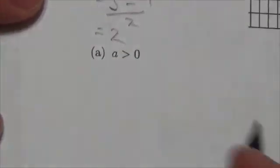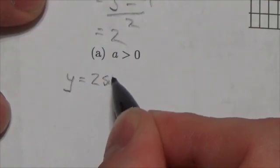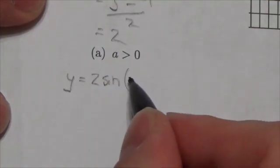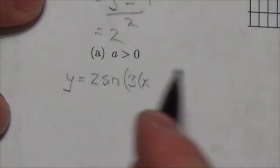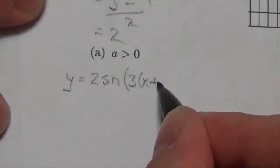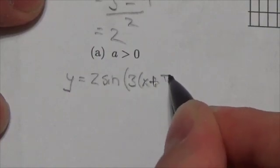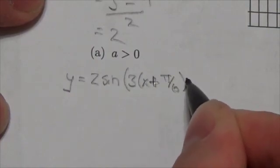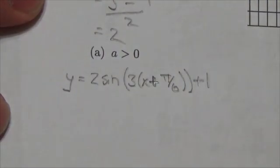So here's my function. y equals 2 sine of, my b value is 3. I know that if I've got a positive sine here, this must have moved to the left, remember that's a positive sign there, to the left pi over 6, close bracket, and it's been moved up 1.